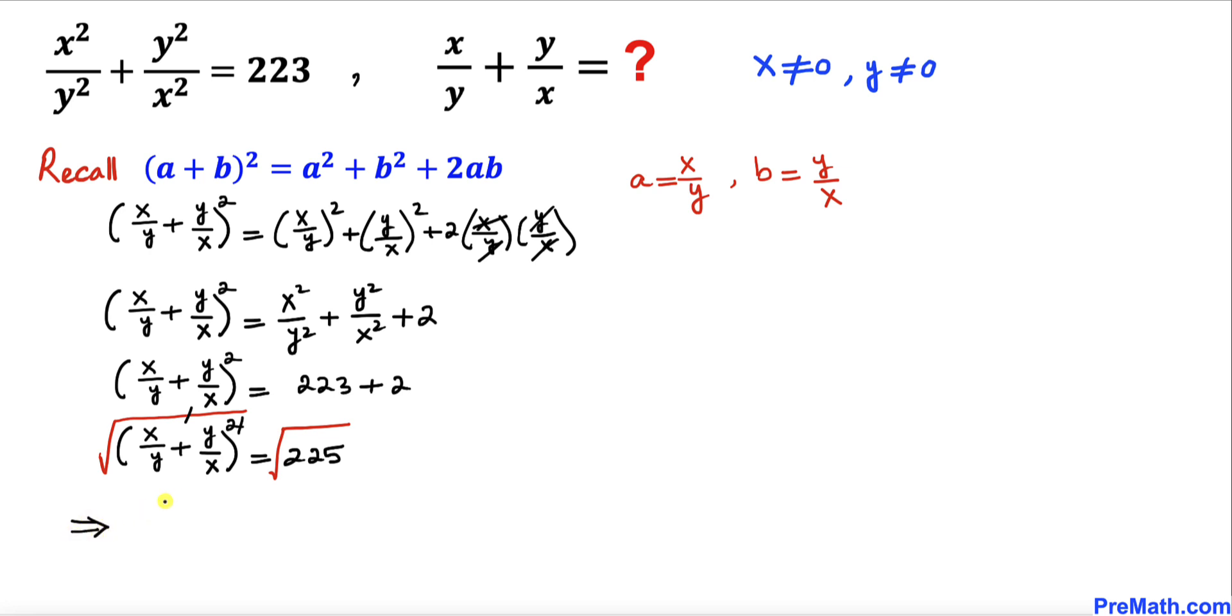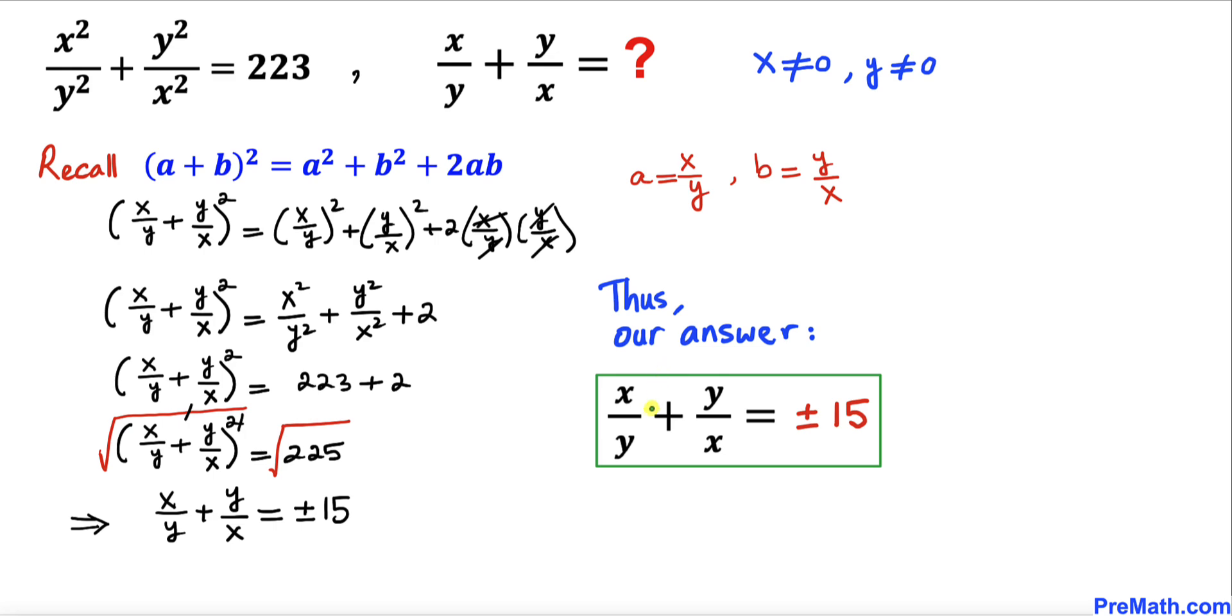so we simply ended up with x/y + y/x which turns out to be the square root of 225, which is positive or negative 15. And that's what we were looking for: the value of x/y + y/x. So our answer is positive or negative 15.